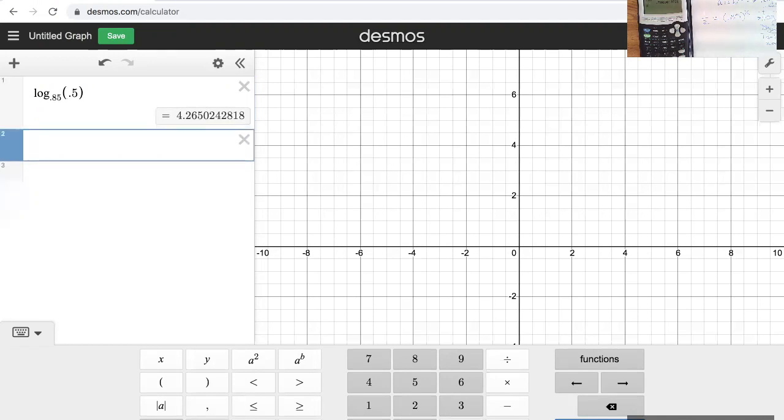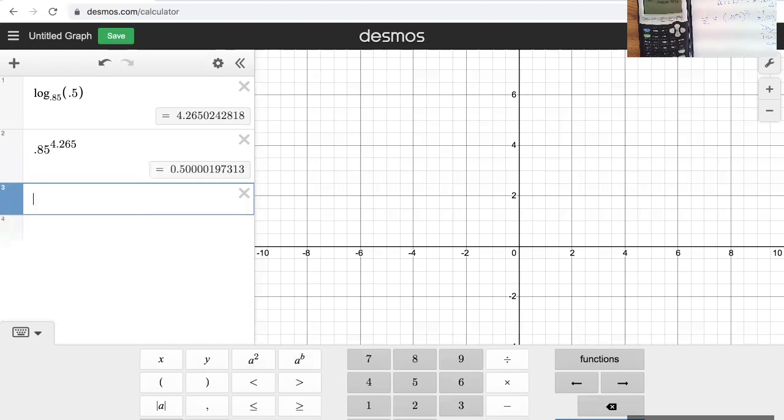I can check to see if 85 hundredths raised to the 4 and 265 thousandths, so my new base gives me a half, and there you have it.